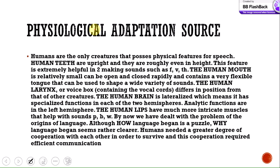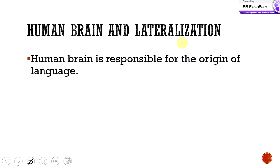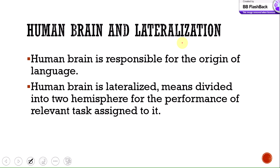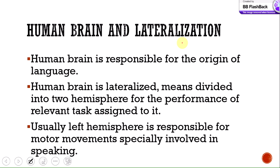The Physiological Adaptation Source notes that humans are the only creatures possessing all the physical features needed for speech — teeth, lips, nose, vocal tract, and the human brain. No other creature has all of these simultaneously. It is believed that having these physiological adaptations enabled language. The human brain is lateralized — divided into two hemispheres — and usually the left hemisphere is responsible for motor movement, especially speaking.